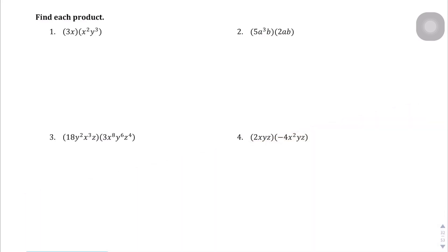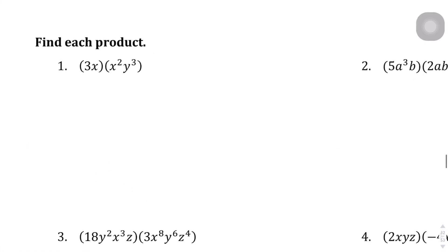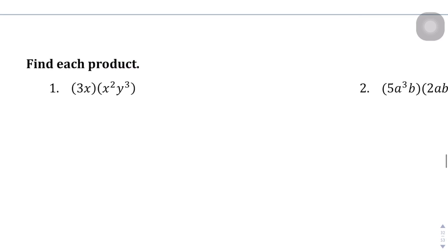We're on page 32 and we've got these four questions — we're multiplying polynomials, whereas before we were adding and subtracting, so this is a little bit different. I'm going to jump into these first questions and explain my way through them. Multiplying is a little bit different in the sense that each thing inside is being multiplied too, so I'm just going to rewrite everything in one line.